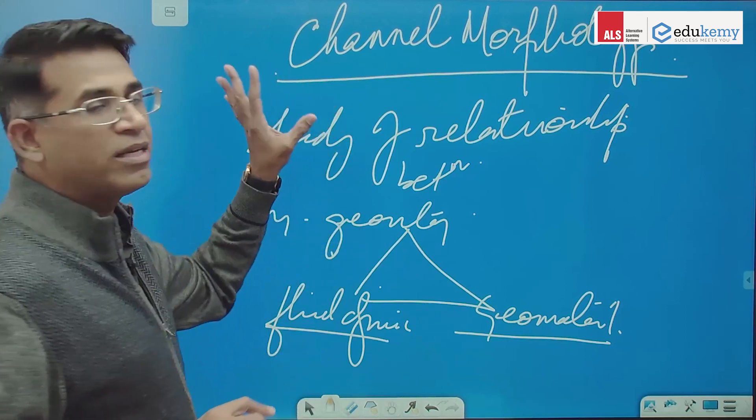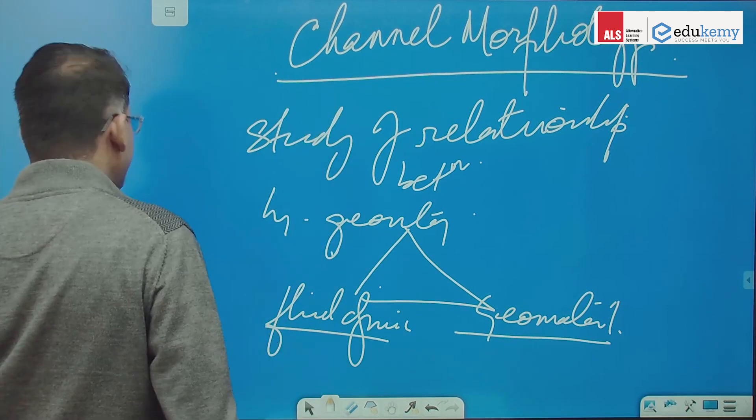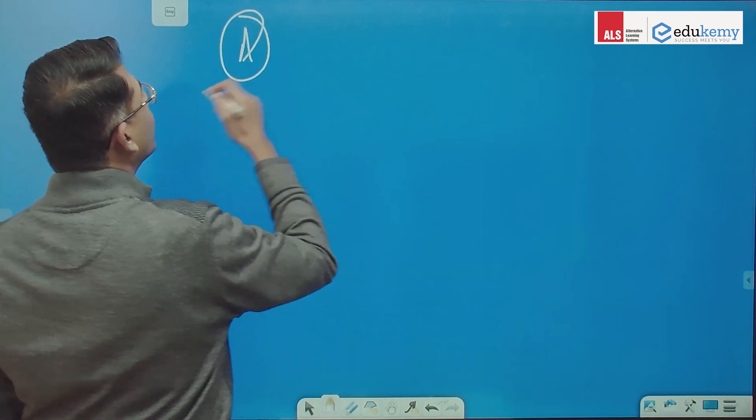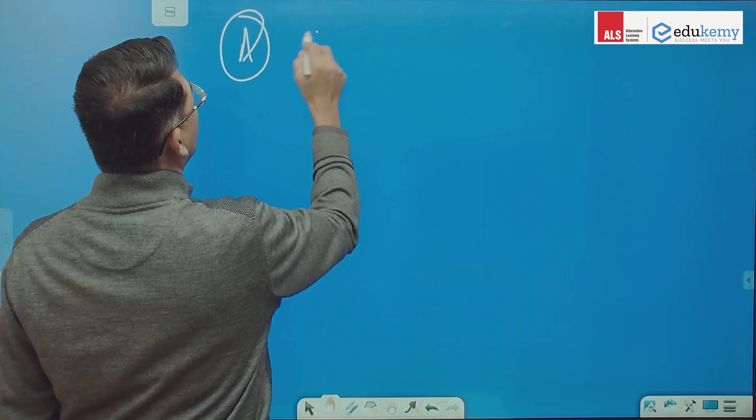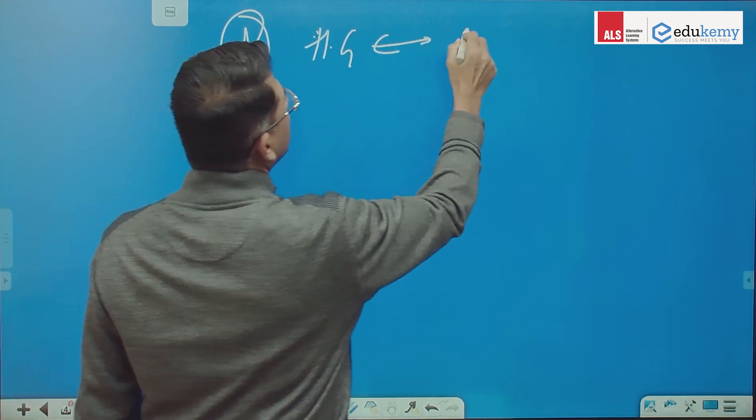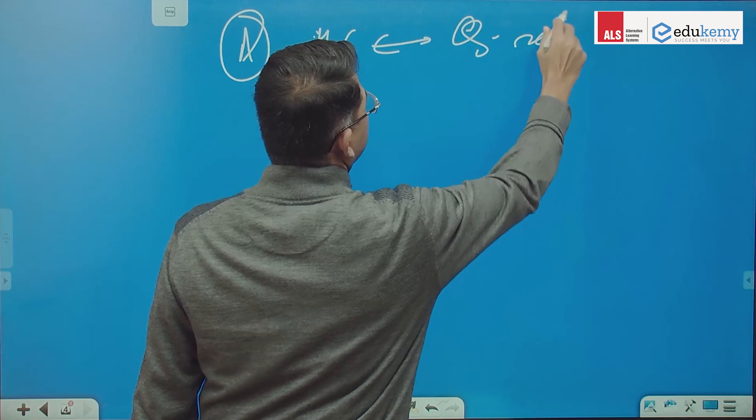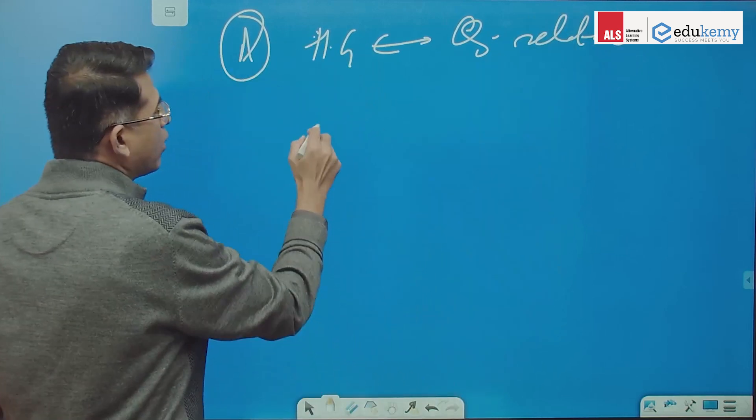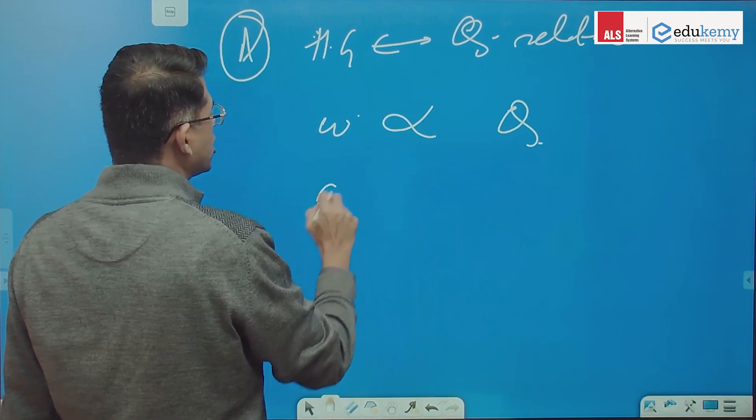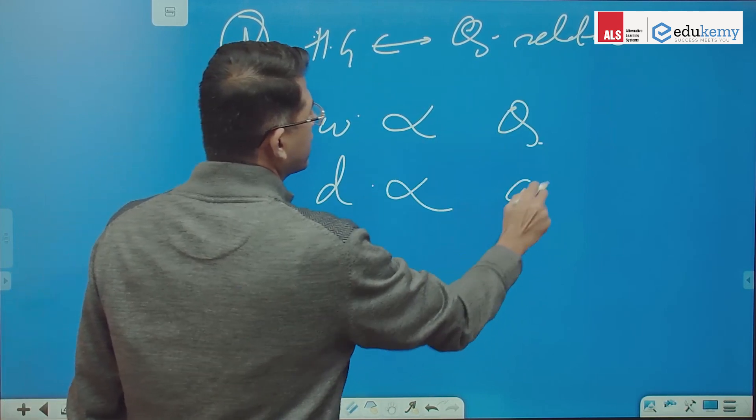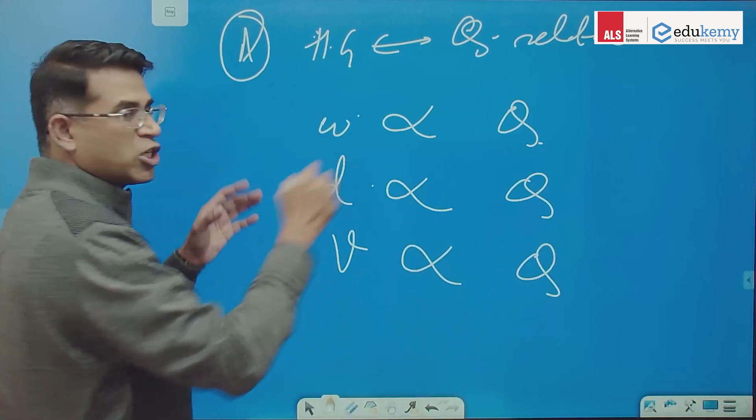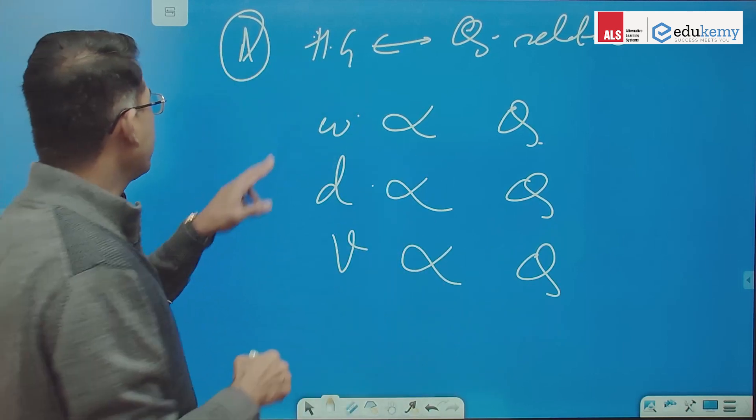This is what is channel morphology. Now in this, I started with one discussion: how are the elements of the hydraulic geometry and discharge related? How are they related to one another? So we talked about the relationship of width with discharge, the relationship of depth with discharge, relationship of velocity with discharge. Do you remember the relationship?